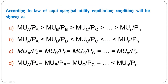Next: 'According to the law of equi-marginal utility, the equilibrium condition is shown as?' The equilibrium under the law of equi-marginal utility holds when the ratio of marginal utility to price is equal for all goods — MU(A)/P(A) = MU(B)/P(B) — so C is the correct answer.